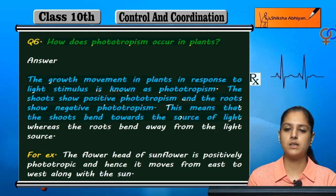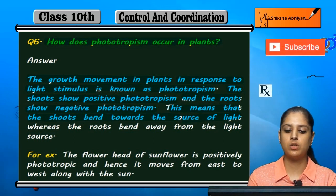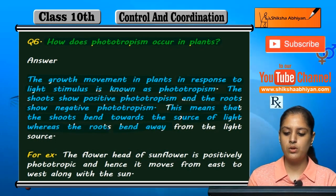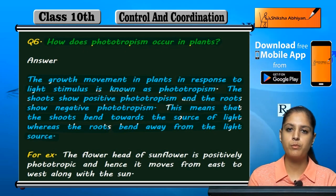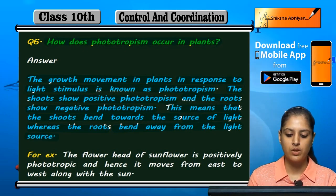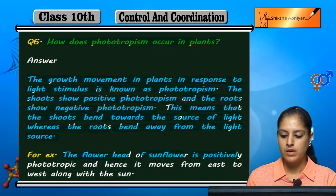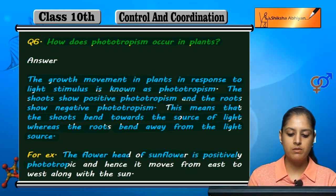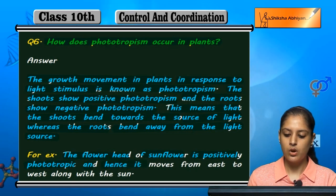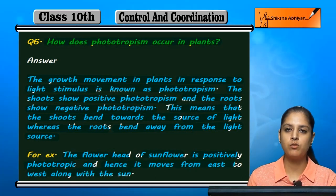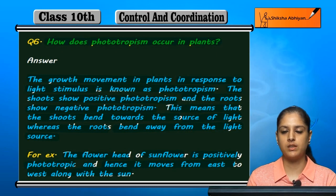Shoots bend towards the source of light — they grow towards the light. But roots grow in the opposite direction of the light source. For example, the flower head of a sunflower is positively phototropic, and that is why it moves from east to west following the sun's movement.